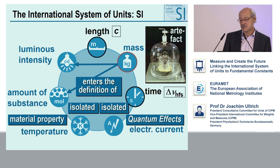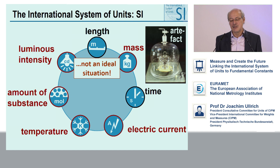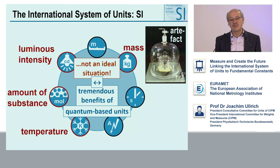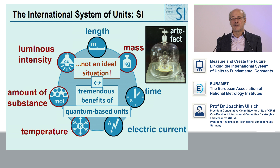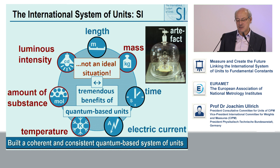The Kelvin is also completely isolated from the rest of the SI. Altogether, we can say we have a non-ideal situation for five out of the seven base quantities. At the same time, we have seen tremendous benefits of quantum-based units for length, for time, and very recently for electric current. So the question is: can we build a coherent and consistent set of units based on quantum effects?